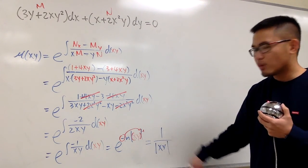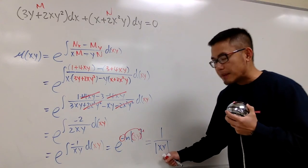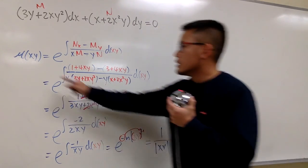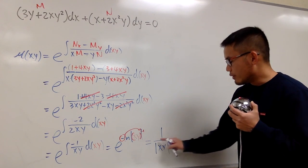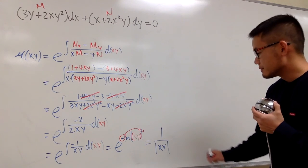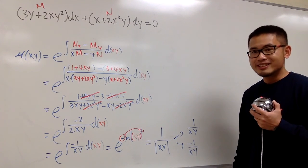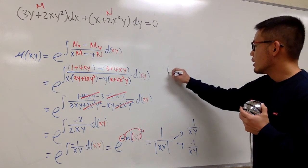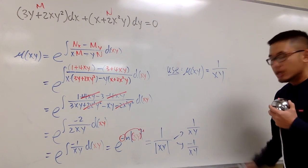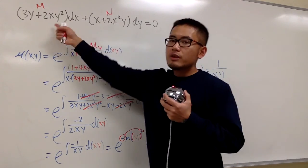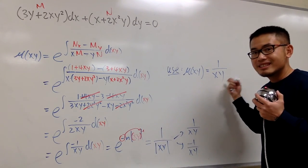A lot of people ask: should I keep the absolute value or not? The absolute value doesn't matter, because the integrating factor is either the positive version of 1/xy or the negative version of 1/xy — that's what absolute value does, it gives you the plus or minus. It's up to you which one to use; use the positive one. So we use mu(xy) = 1/xy. If you use the negative version, multiply everything by that, then divide by negative 1 — it's the same. Use this; it's enough.